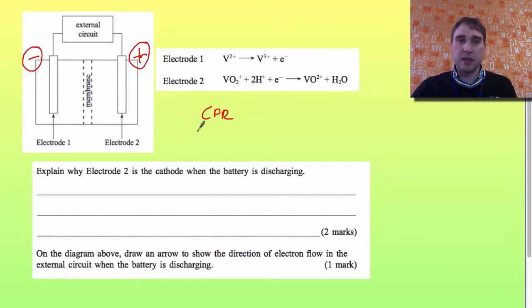Cathode positive reduction is how I remember that. So CPR. On the other side is ANO, the first three letters of anode. So for a galvanic cell, cathode positive reduction, anode negative oxidation. Now we need to figure out which direction the electrons are going. The electrons go from negative to positive. They're repelled from the negative side and go to the positive side. So I've drawn some arrows on there to show that. I'll just do a big arrow up here, and this will be my answer.